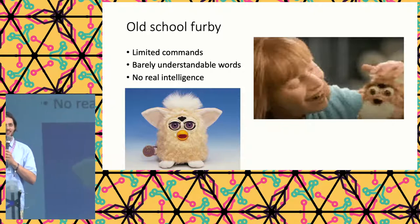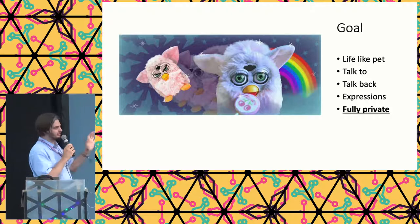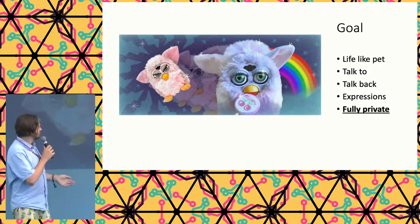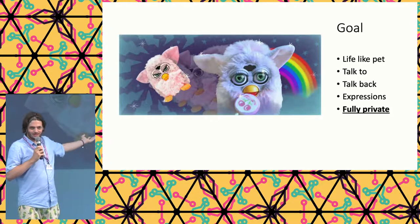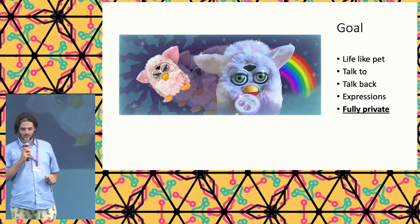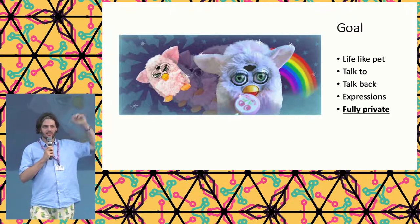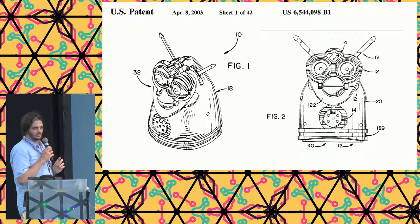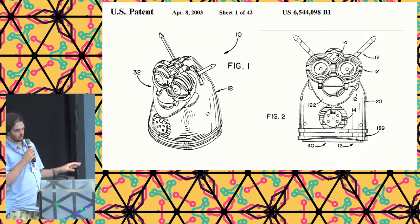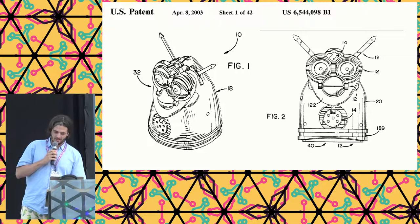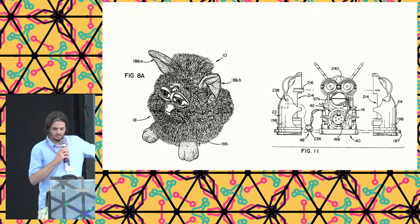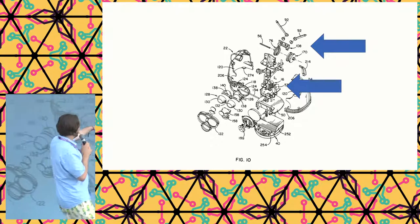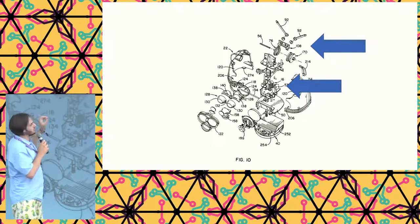The goal is to have a real-life pet: it can talk, walk, maybe sing, I can talk to it and it talks back, it can control the house, and it can have expressions because it already has a motor in there. But the problem is it also has to be fully private — I can run it at my home without exposing any data to the cloud or to Google or Amazon. Inside the Furby there's a speaker, fur, and a motor with a worm wheel that drives a cog controlling all components — eyes, ears, mouth — with one motor.